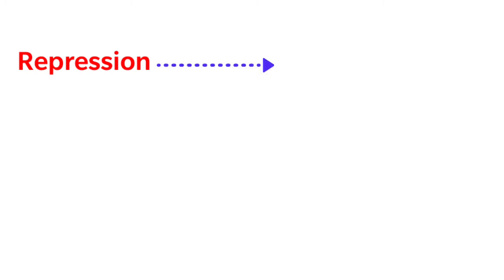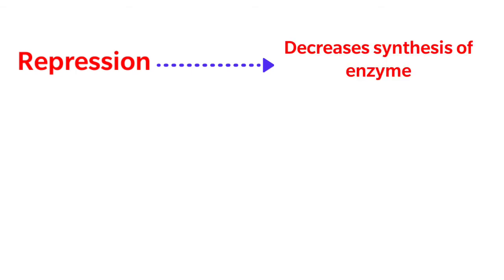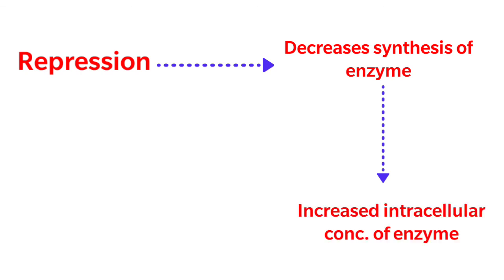Whenever repression takes place, it causes decreased synthesis of the enzyme, which leads to a decreased intracellular concentration of that particular enzyme. Whenever the concentration of an enzyme is decreased in a cell, it leads to a decreased rate of the pathway in which it is involved. So the overall effect of repression is a decrease in the rate of that particular pathway.